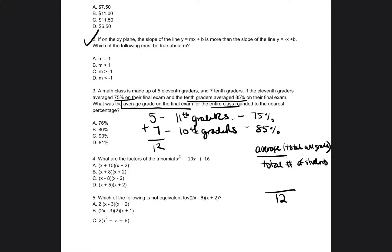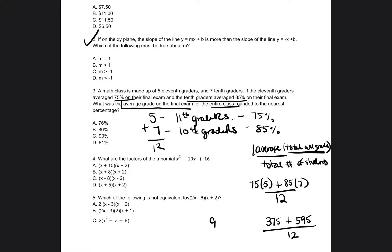To find the total of all their grades, instead of adding 75 five times and 85 seven times individually, we do it the simple way: 75 times 5 plus 85 times 7. Using our calculators: 75 times 5 equals 375, and 85 times 7 equals 595. Adding those together gives us 970. So we have 970 divided by 12, which equals 80.83.